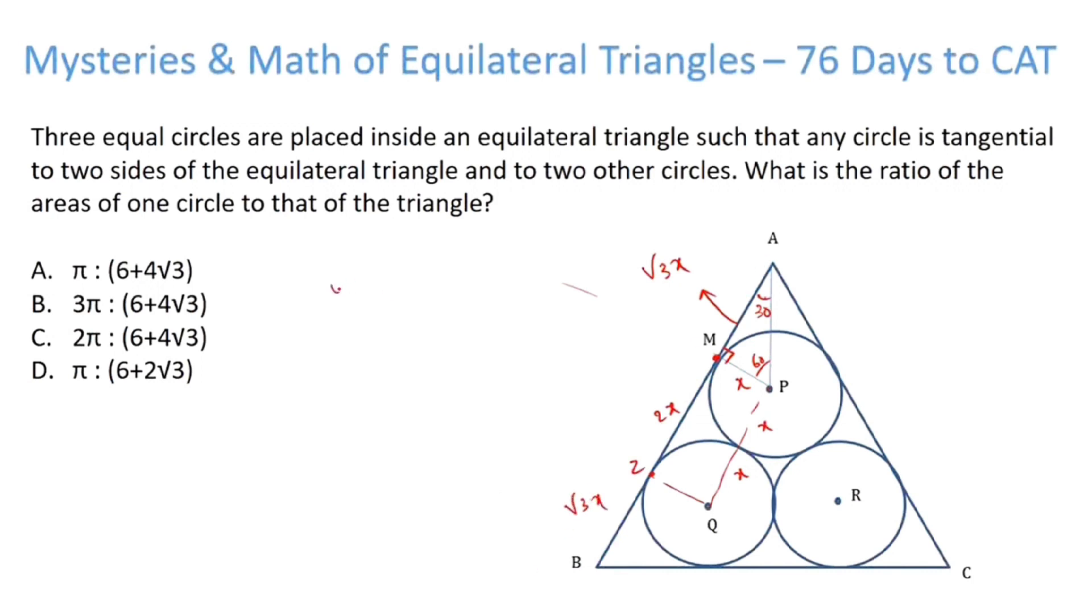So what is ab? Ab becomes 2x plus 2 root 3x. So if we take 2x common, root 3 plus 1. So that's the side of the triangle. What is the ratio of areas of one circle to that of the triangle? The area of the circle is pi x square. Area of the triangle is root 3 by 4 into square of this. So 4x square, square of this becomes 3 plus 1, 4 plus 2 root 3.